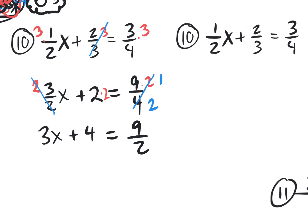Now for the last step, I want to get rid of that last fraction. Multiply everything by 2 — times 2, times 2, times 2. I end up with 6x plus 8 equaling 9. That was a lot of work to get rid of 3 fractions.